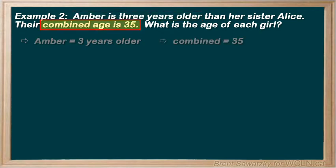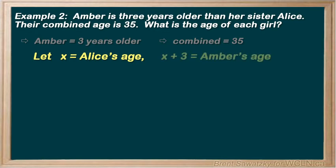So, on to step 2. We may go back and read it again. But did we get an idea for the variable? Let's see. If we say that our variable is x and that x is the age of Alice, the younger sister, then the age for Amber is 3 years more than that, or x plus 3.